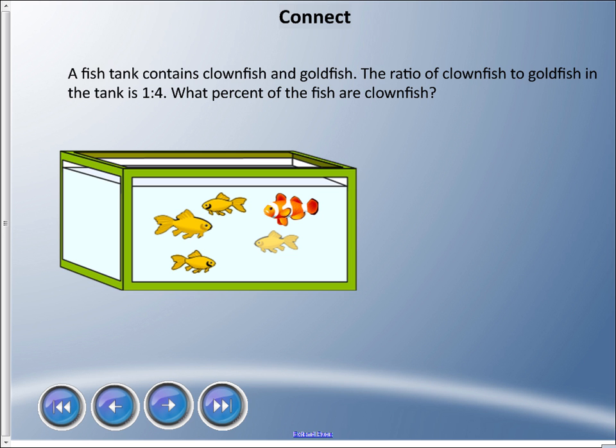1:4 is a part-to-part ratio. We can't really do anything with part-to-part ratios, but we can do something with part-to-whole. There is one clownfish out of all fish. There is one, two, three, four, five fish. So we could say there's a 1:5 ratio of clownfish to all fish. We can change this part-to-whole into a fraction, so we can work with this now.